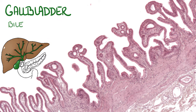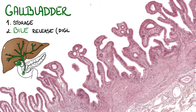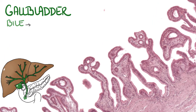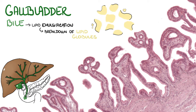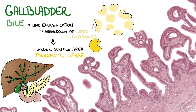The gallbladder's main function is storage and subsequent bile release during the process of digestion. The main function of bile is lipid emulsification, which is a breakdown of lipid globules into smaller droplets. This is important because it provides a larger surface area which the enzyme pancreatic lipase can act on.